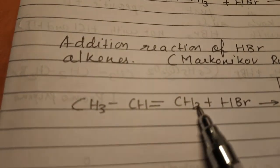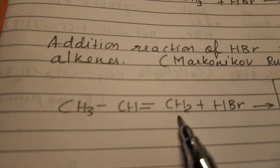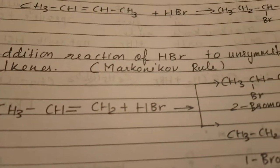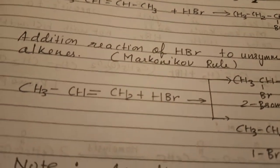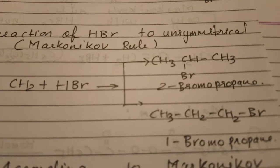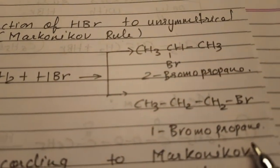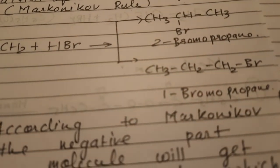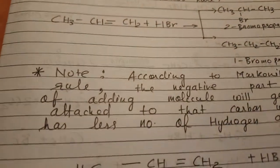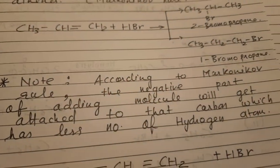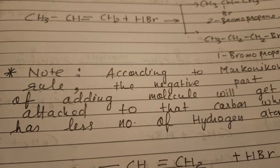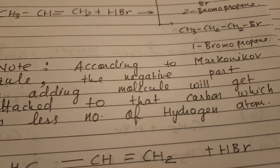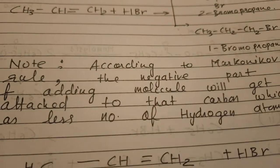Consider propene — 3 carbons, so it is an asymmetrical alkene. When HBr is added to propene, two possibilities exist: it could form either 2-bromopropane or 1-bromopropane. Markovnikov studied this and found that according to his rule, the negative part of the adding molecule will get attached to the carbon which has the fewer number of hydrogen atoms.